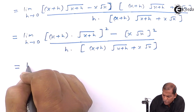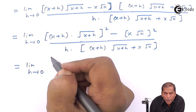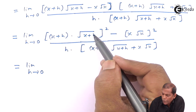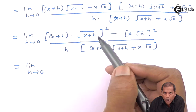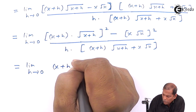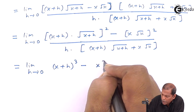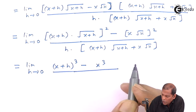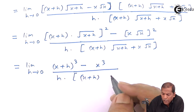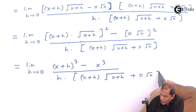On simplifying further, we get limit h tends to 0. Opening the brackets: the square of (x+h) into square root of (x+h) gives (x+h)³, since squaring removes the square root and leaves (x+h) squared times (x+h). The square of x root x gives x³. So the numerator becomes (x+h)³ minus x³, divided by h into [(x+h) into square root of (x+h) plus x root x].